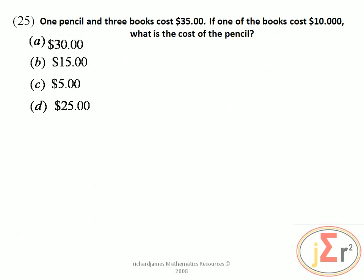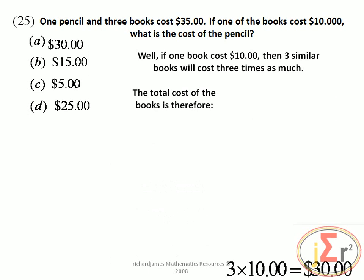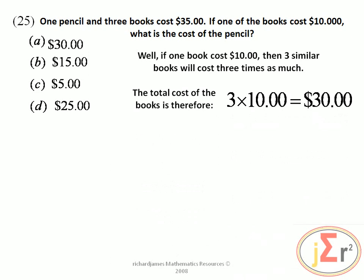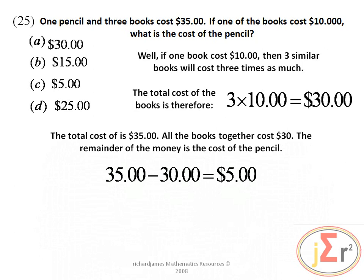One pencil and three books cost $35. If one book costs $10, what is the cost of the pencil? If one book costs $10, then three similar books cost three times as much: 3 multiplied by 10 equals $30. The entire package costs $35; all the books together cost $30; the remainder is the cost of the pencil. So 35 minus 30 equals $5, represented by option C.